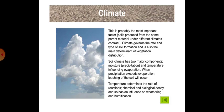Now comes climate. This is probably the most important factor. Soils produced from the same parent material under different climates contrast. Climate governs the rate and type of soil formation and is also the main determinant of vegetation distribution. Soil climate has two major components: moisture or precipitation and temperature, influencing evaporation. When precipitation exceeds evaporation, leaching of the soil will occur. Temperature determines the rate of chemical and biological reactions and so has an influence on weathering and humification, as shown in the figure.